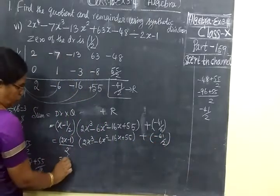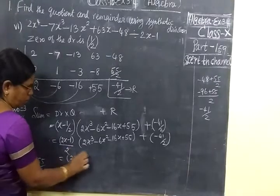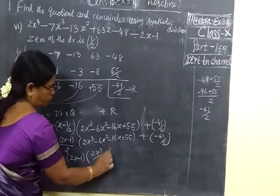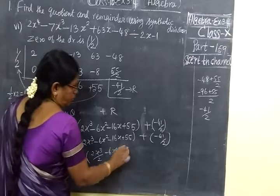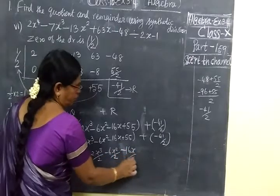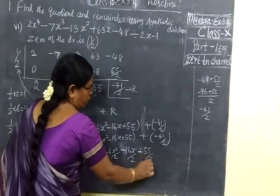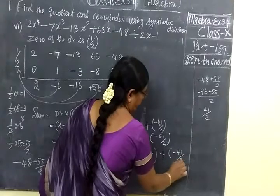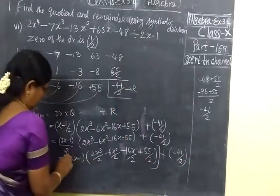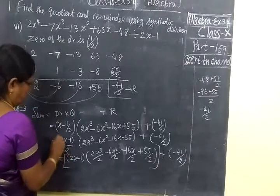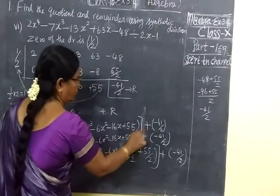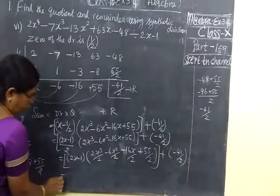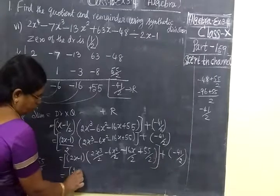This is 2, we will move on. So 2x minus 1, take this 2 inside. So 2x^4/2 minus 6x^3/2 minus 16x/2 plus 55/2. Then remainder, this is the form. This is p(x) into q(x), and the r(x) is the remainder. So this is equal to 2x minus 1.